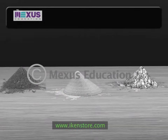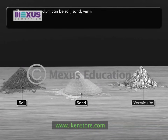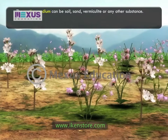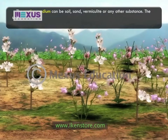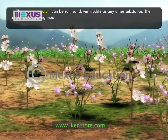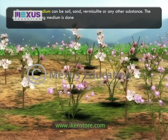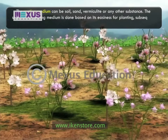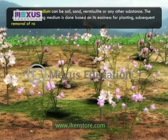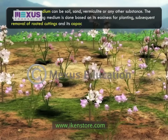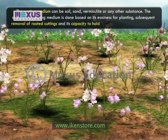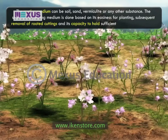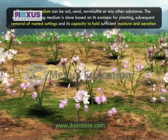The rooting medium can be soil, sand, vermiculite or any other substance. The selection of rooting medium is done based on its easiness for planting, subsequent removal of rooted cuttings and its capacity to hold sufficient moisture and aeration.